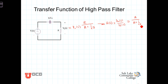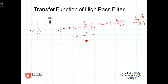Getting it in the standard form — we've got an S in the denominator of the denominator, so we need to multiply by S to get rid of that. When we multiply over R we'll have S times R. So if we multiply numerator and denominator by S over R, we get H of S equal to S over S plus 1 over RC.